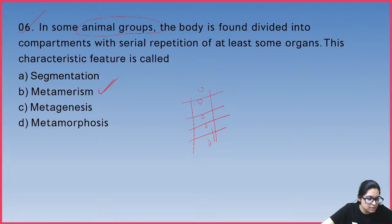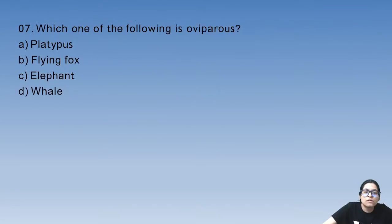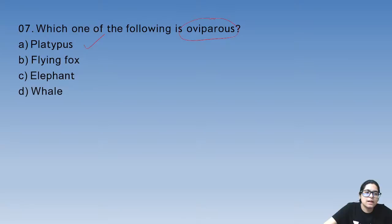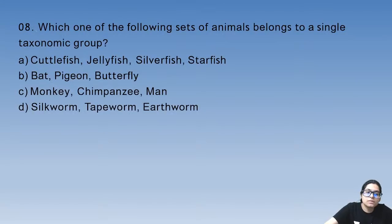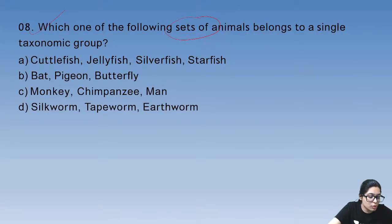Next question: which of the following is oviparous? The platypus (Ornithorhynchus) — the duck-billed platypus — is oviparous. Very good. Platypus is oviparous.